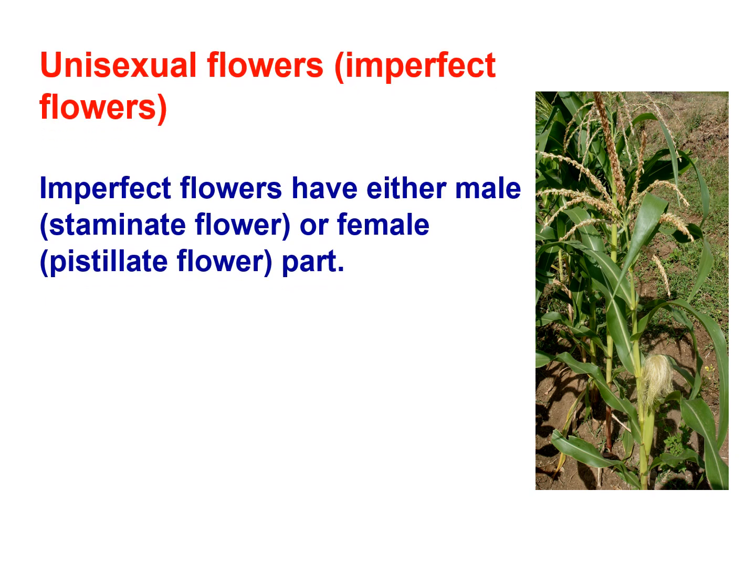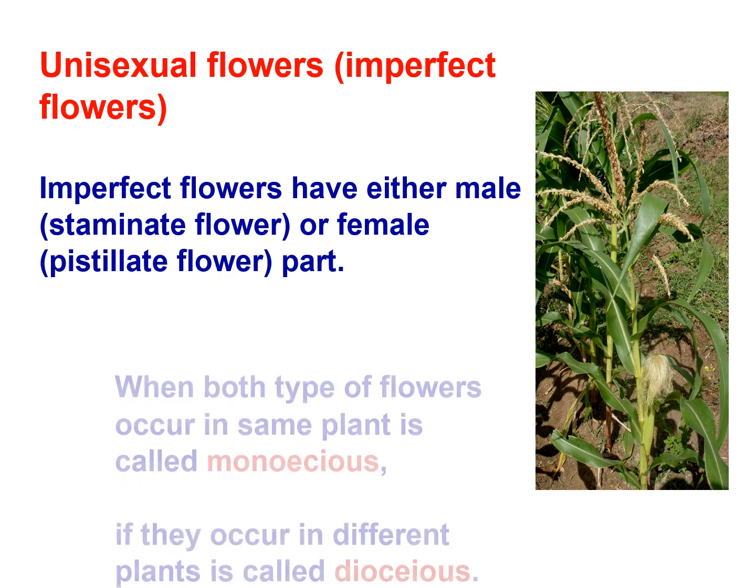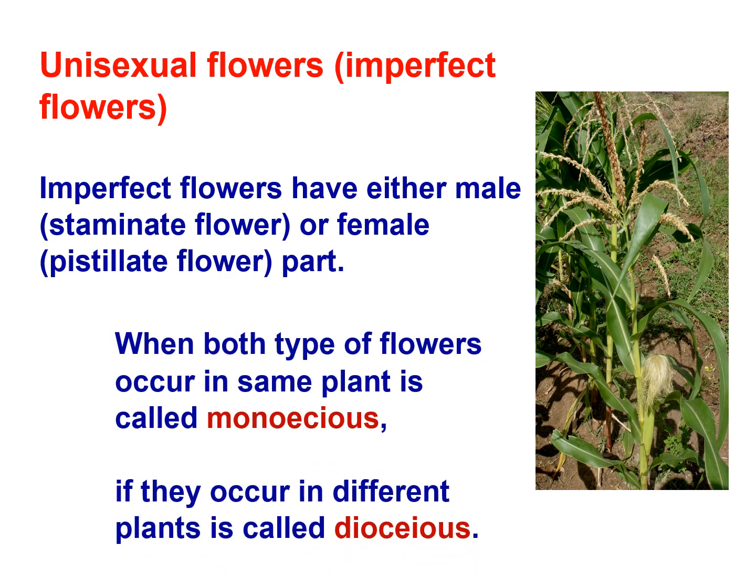Unisexual or imperfect flowers have either the male or female part only. When both types of flowers occur on the same plant, it is called monoecious. If they occur on different plants, it is called dioecious.